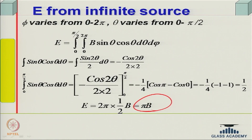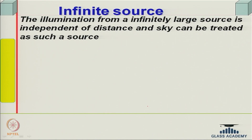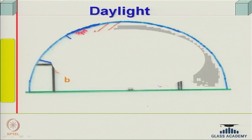Sky brightness is important. Illumination from an infinitely large source is independent of distance, and the sky can be treated as such a source. However, sky brightness varies — it changes from morning to evening and from location to location across cities like Delhi, Chennai, Mumbai, Kolkata, and Guwahati. Therefore a variation exists and we use the concept of daylight factor to handle this.